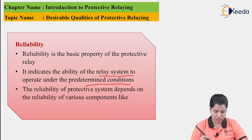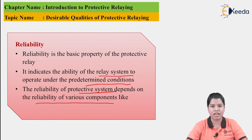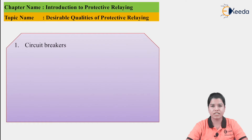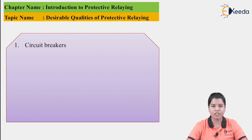The reliability of the protective system basically depends on how reliable the various connected equipments are. The first equipment is the Circuit Breaker. The circuit breaker receives a signal from the relay. When a fault occurs and the relay senses it, it sends a signal to the circuit breaker. The circuit breaker contacts are normally closed, but when the relay sends the signal, the contacts should open. This is the reliable operation of the circuit breaker.